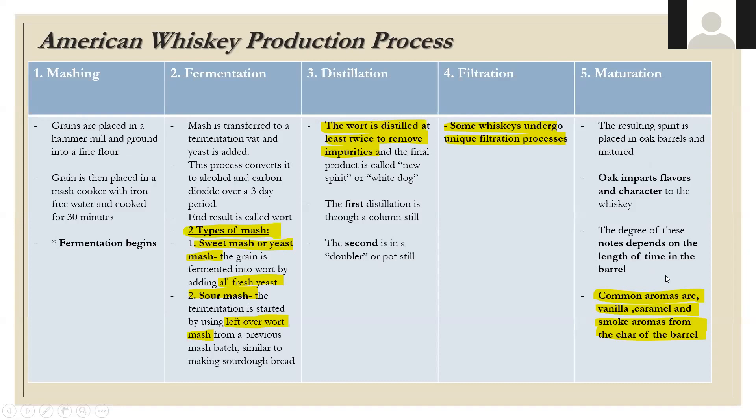Common aromatics you get from oak barrels — just like in wine — include vanilla and caramel. Here you might see a little more smoke because of the heavier intensity of the char.